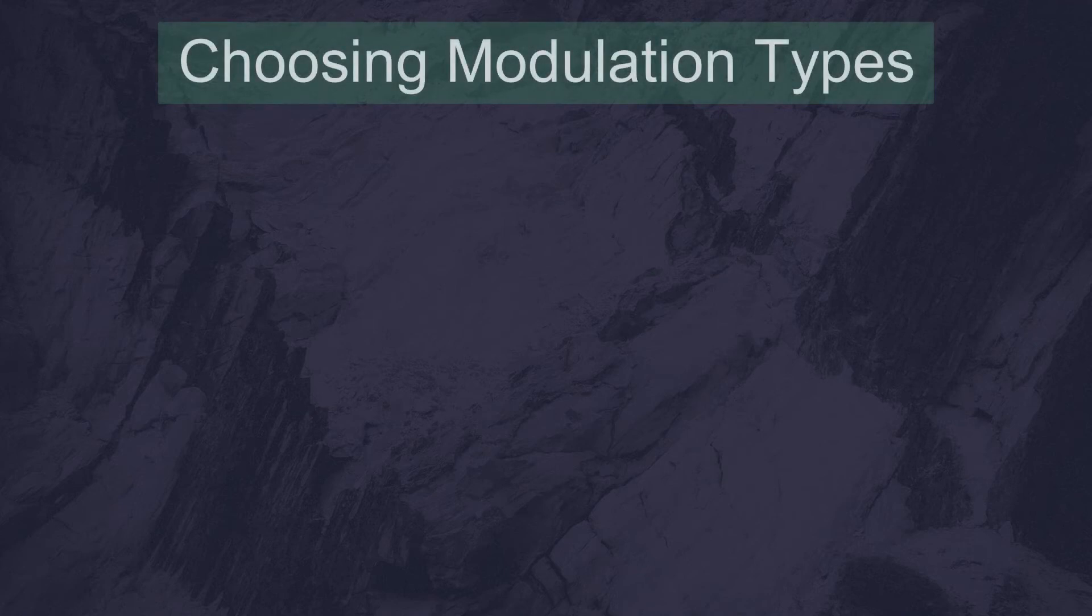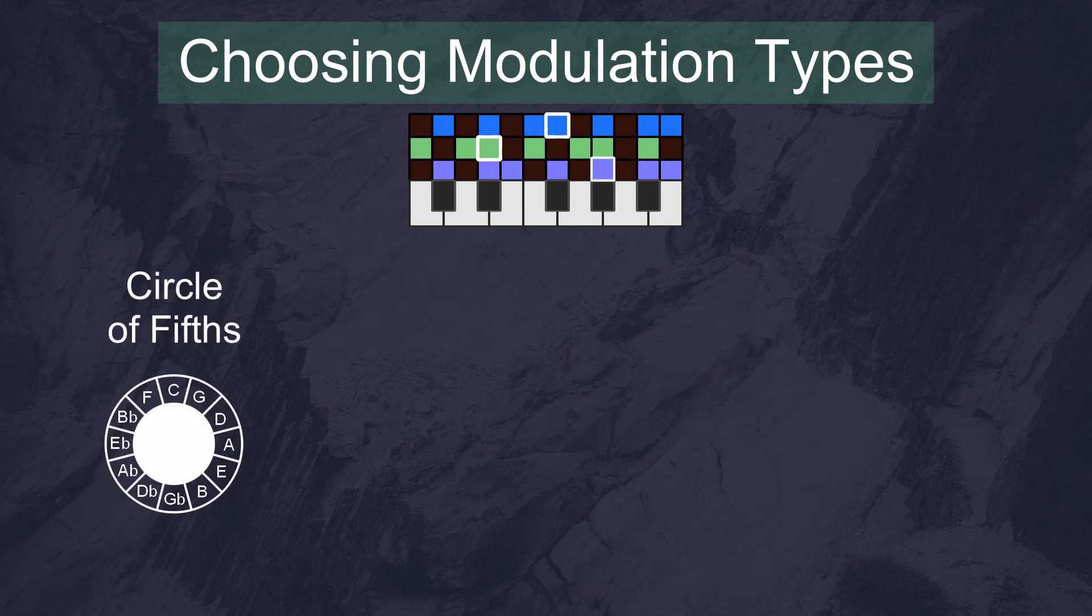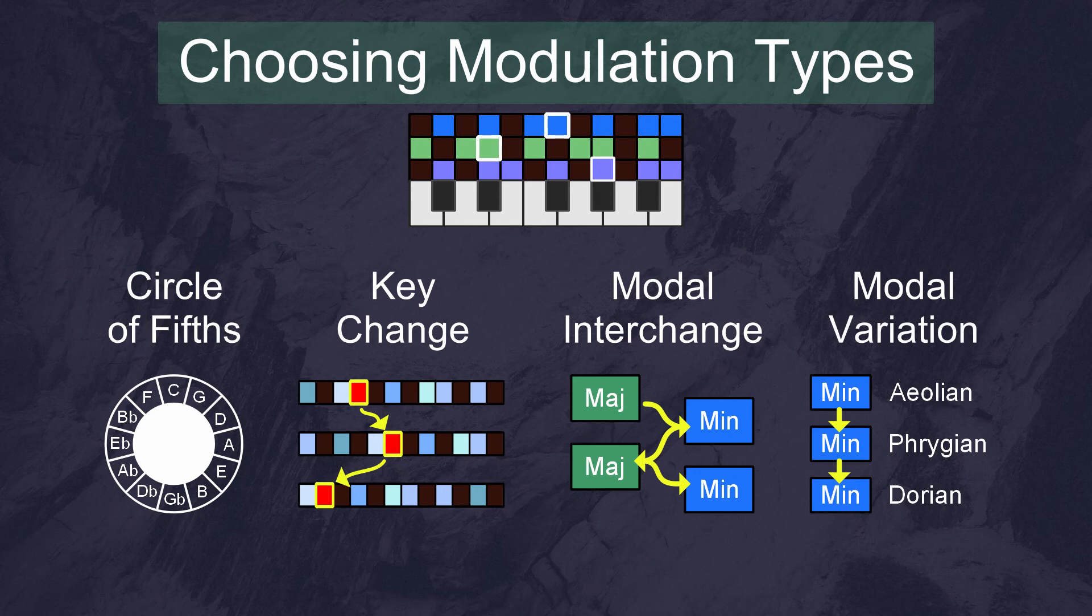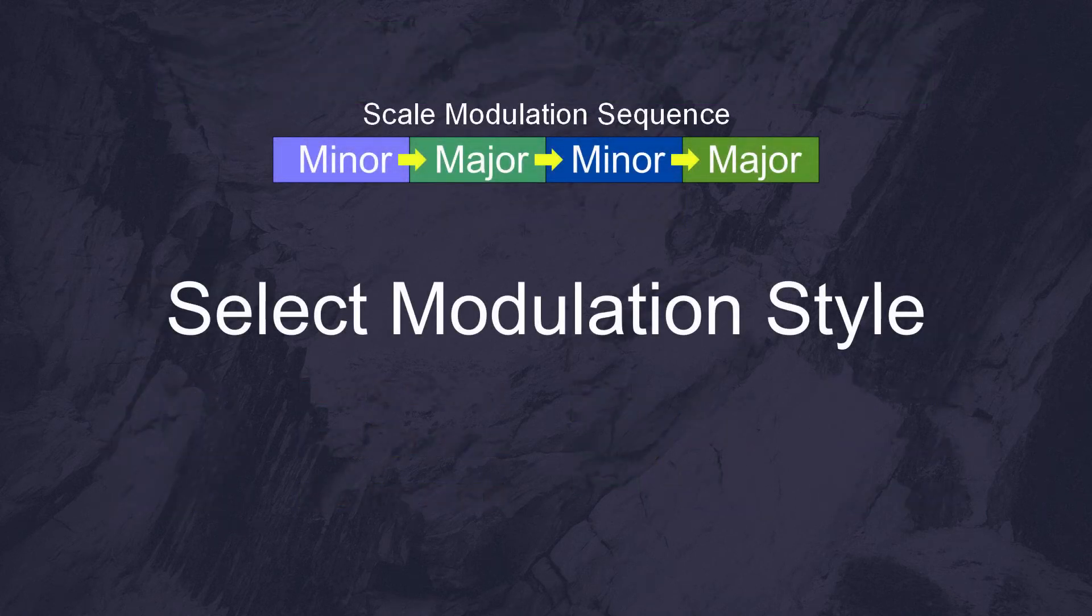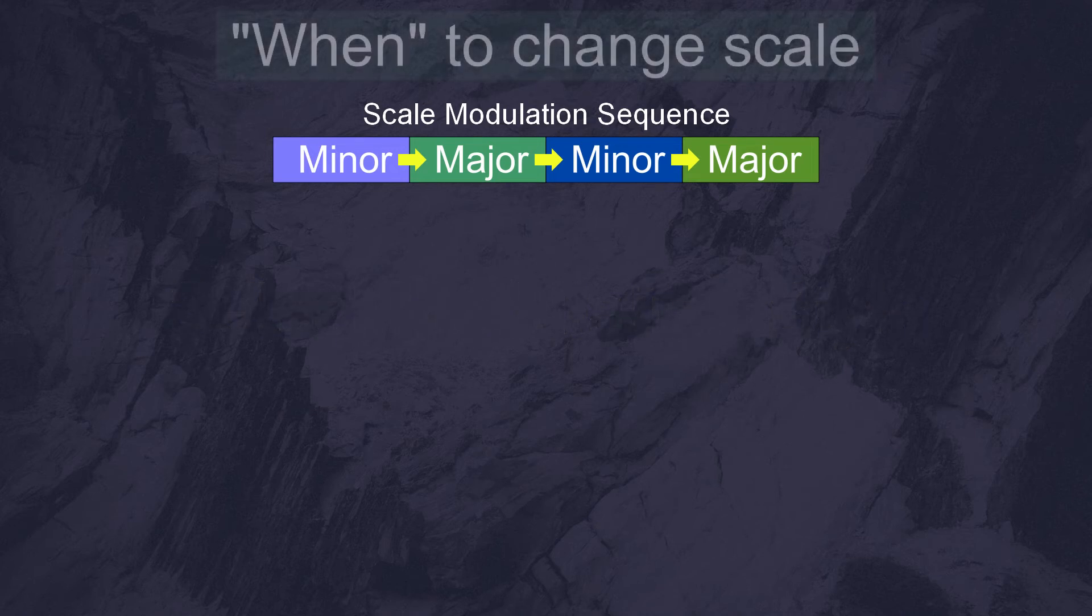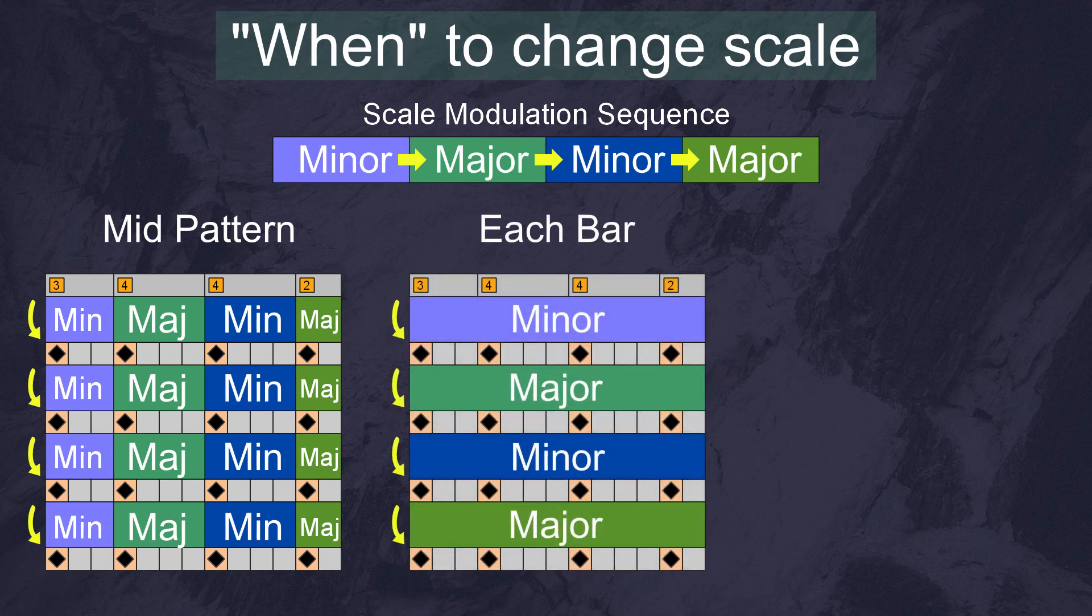There are a few different methods that we can take to do this. We can move around the circle of fifths. We can do simple key changes. We can use modal interchange, moving between minor and major. Or we might stick to only minor modes. Once we've selected our desired modulation style, we can move through that list at will, meaning that we can modulate our key in a very intentional way. Then to decide when we want to change between scales, we have three options: we can change mid-pattern, we can change each bar, or we can change after each section.